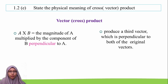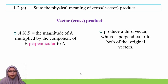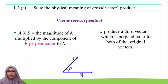Meanwhile, we have the vector product, also known as cross product. It is written as A cross B, and it is equal to the magnitude of A multiplied by the component of B perpendicular to A. The vector product will produce a third vector which is perpendicular to both of the original vectors.